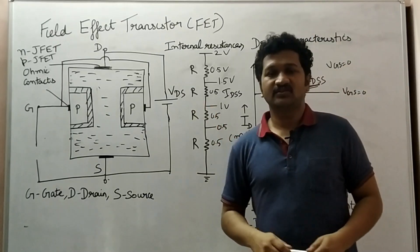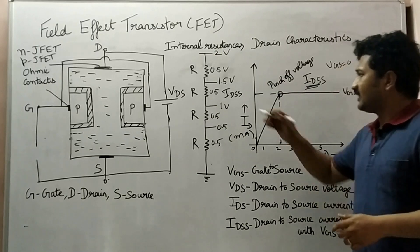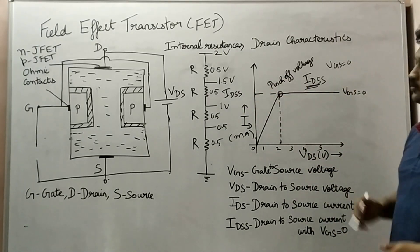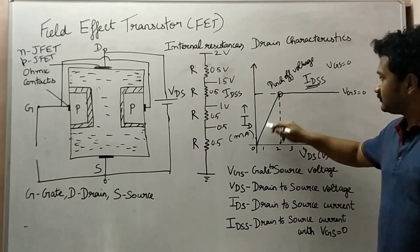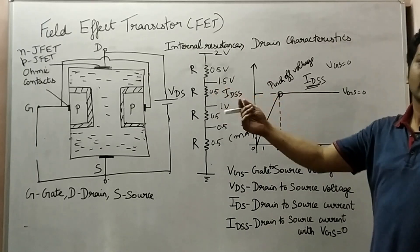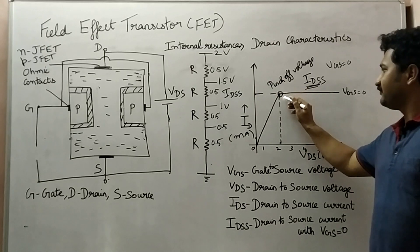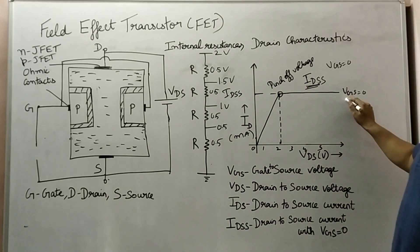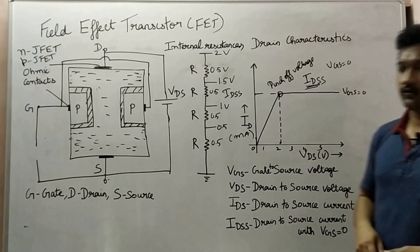In the previous video we saw about the maximum drain current IDSS. IDSS is the maximum drain-to-source current when VGS is equal to zero. We increase VDS from zero to a point where the depletion layer reaches pinch-off, above which even if we increase VDS further, the drain-to-source current remains constant.